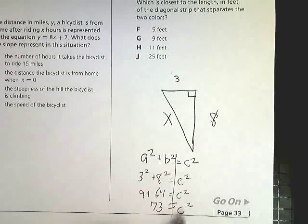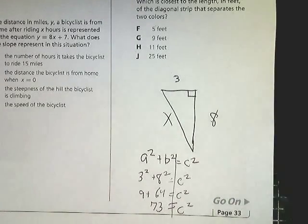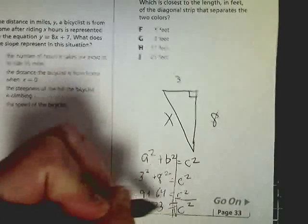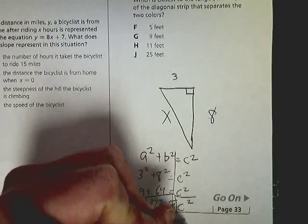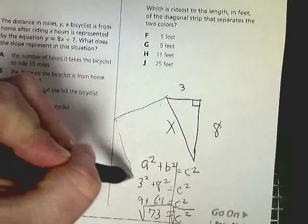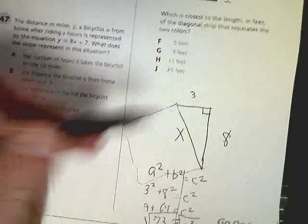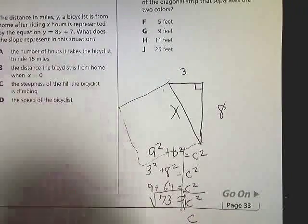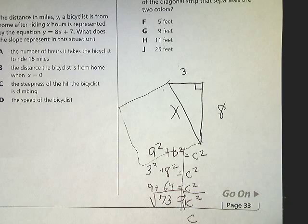And then this is c². I don't want to know what c² is. I want to know what c is. So I'm going to take the square root, because c² will tell me how big this whole square with sides c and c would be, but I want to know just one side, so I need the square root of it. So I take the square root of 73.